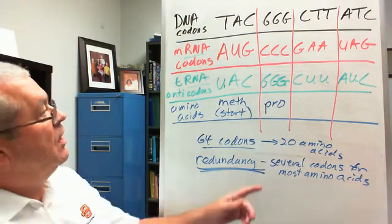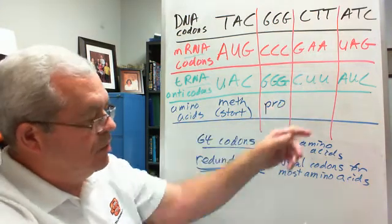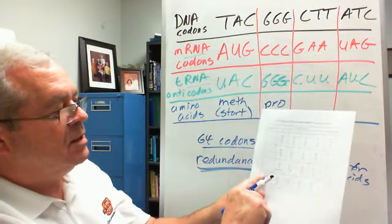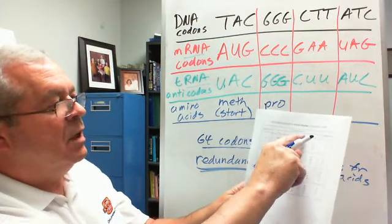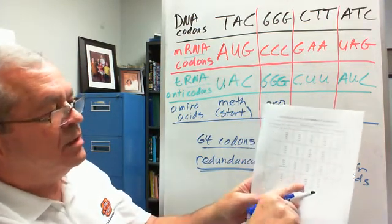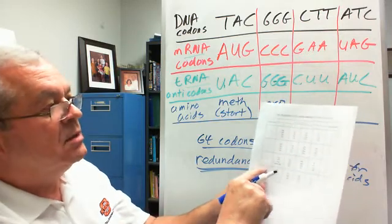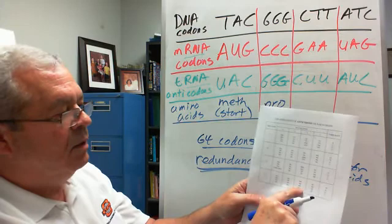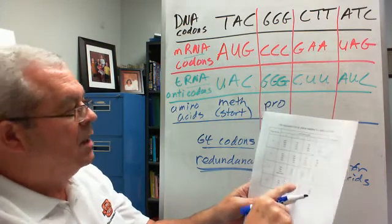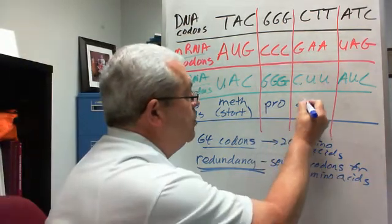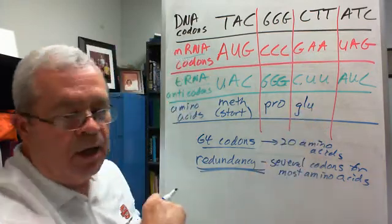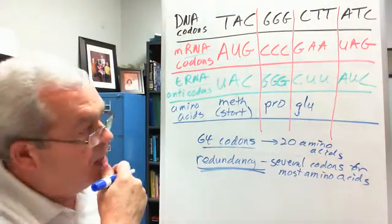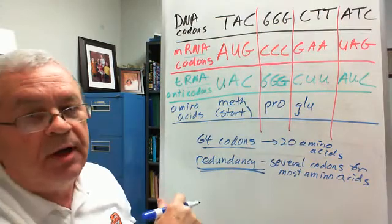What do we got next? Next, we have anticodon CUU. Well, here's first base C here, second base U, and so that brings us to this box right here, right? CU, and then U, we come over here from the third base, we come across and see what? We see GLU, amino acid GLU. All right, one more to go.